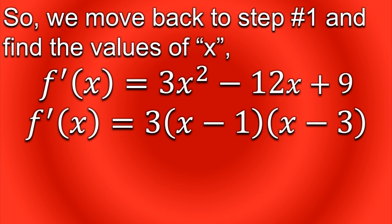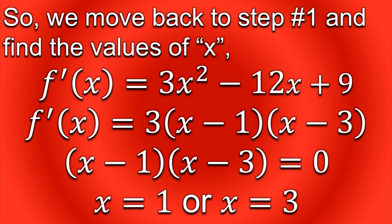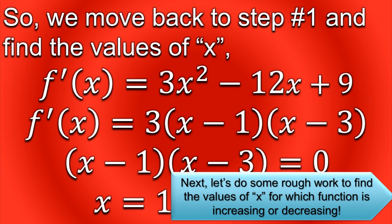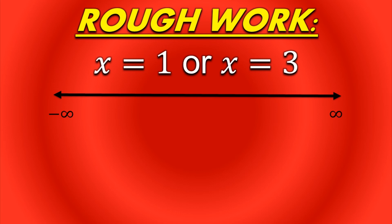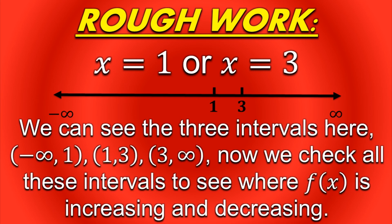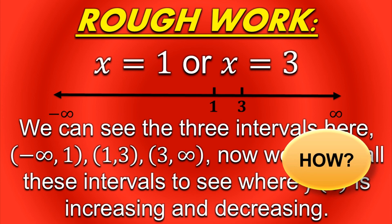We go back to step one and find the values of x by putting f'(x) = 0. By doing so, we obtain x = 1 or x = 3 — two values of x. Next, we do some rough work using a number line. As the domain of the function is not defined, we assume it to be from negative infinity to positive infinity. We plot the points 1 and 3 on the number line, giving us three intervals: (−∞, 1), (1, 3), and (3, ∞). We then check all these intervals to see where f(x) is increasing and decreasing.